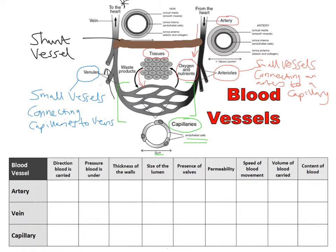They control blood flow by what's called constriction and dilation. When that shunt vessel constricts and narrows, the blood would flow normally from the artery to capillaries and then back to the heart through veins. If that shunt vessel dilates and widens, then blood is able to go directly from the artery, passing down the shunt vessel, completely bypassing the capillaries and heading back to the heart via the vein.